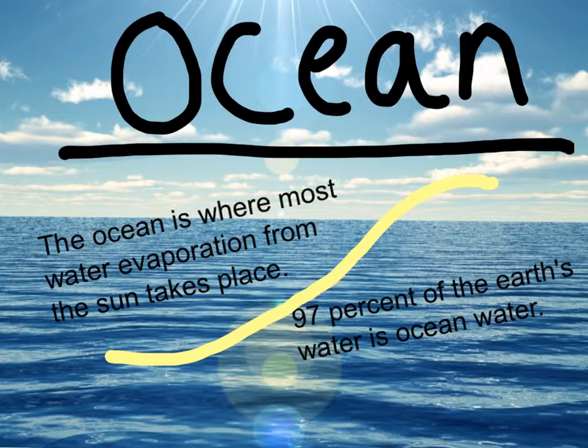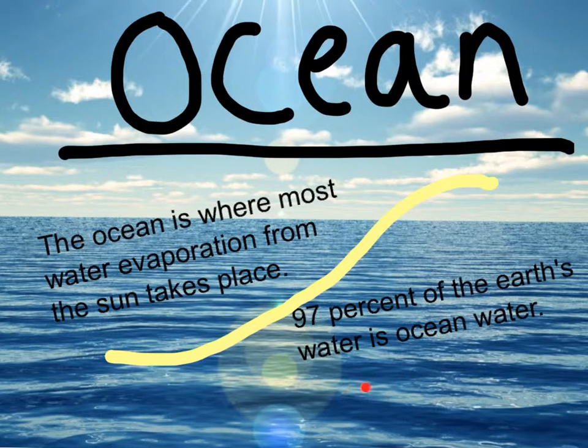The Ocean. The ocean is where most water evaporation from the sun takes place. 97% of Earth's water is ocean water.